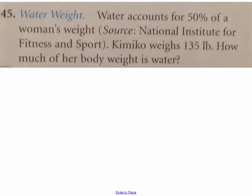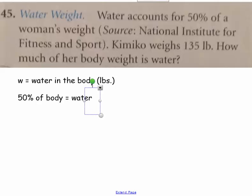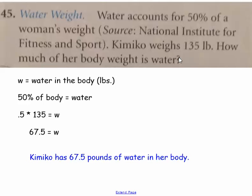In this problem, I could use two variables, but I think I'm going to just use one variable and it's going to stand for the water in the body. Now, we're going to go to the equation. A little tip here. The word of typically means multiplication. So, we have 50% of the body equals water. Now, of is going to turn to multiplication. The body amount we know, so I'm going to plug that in. And my unknown is the amount of water. So, we have 0.5 times 135 equals W. And we just do the arithmetic. So, we get W equals 67.5. And we see up here that that's the water in the body. It's in pounds, so we can write the answer. Our final answer is that she has 67.5 pounds of water in her body.